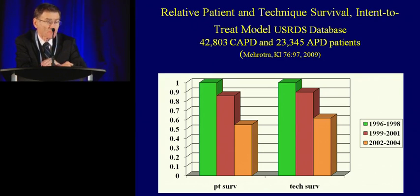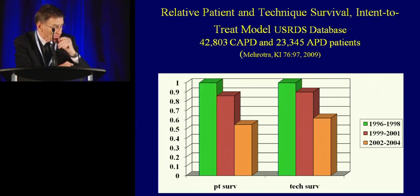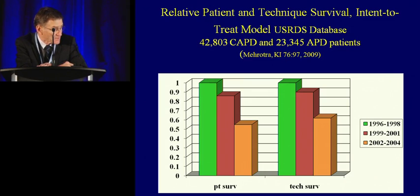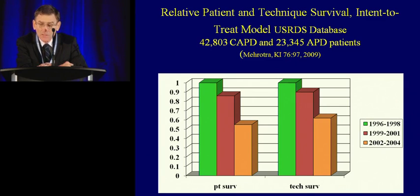Looking at technique survival and patient survival in different time periods for people on PD — both CAPD and APD — the numbers of patients are very large. You can see a dramatic improvement both in technique survival and patient survival, which reaffirms the data just shown.